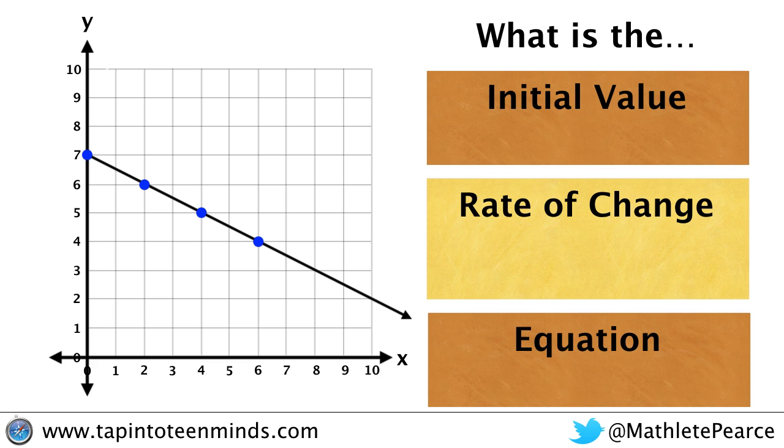Let's take a look at another example. Here we have a linear relationship with the initial value, the starting value being 7 on the y-axis. The pattern begins at 7 and it looks like it's a decreasing pattern. If we look at the rate of change, the rise is negative 1 and the run is 2. So our rate of change would be negative 1 over 2 or negative 0.5.